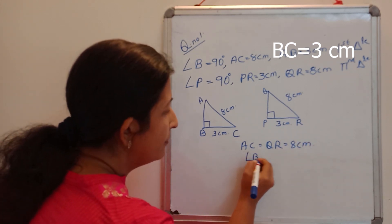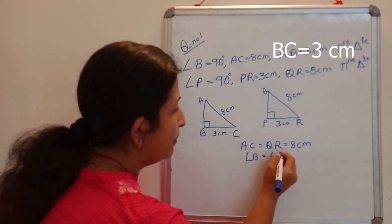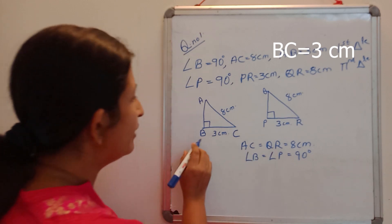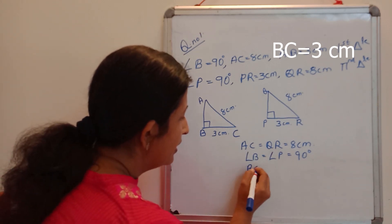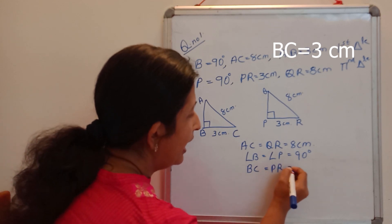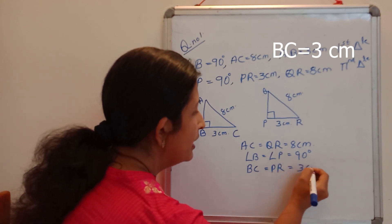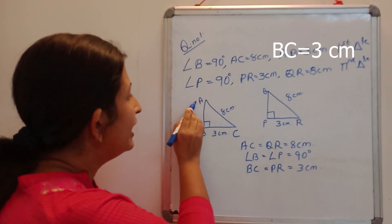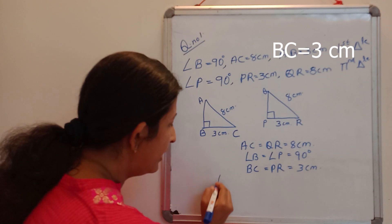B equal to angle P equal to 90 degree. And one more side BC, BC equal to PR equal to 3 cm.